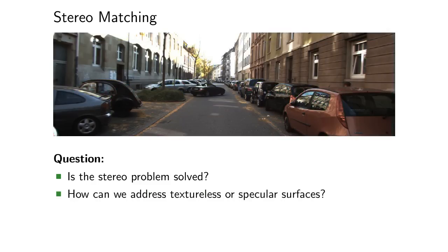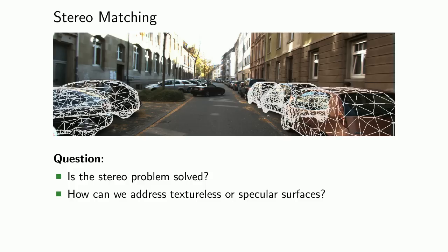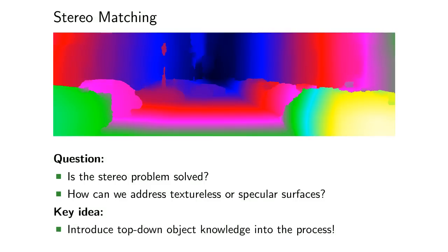In this work, we argue that stereo matching should not be considered a purely bottom-up process. Instead, we incorporate top-down information about the shape of objects into our formulation. For instance, our prior encourages image regions depicting cars to be explained by plausible car geometries. Using this prior, and jointly reasoning about objects and disparities, we obtain smooth depth maps also in regions where the data term is weak.